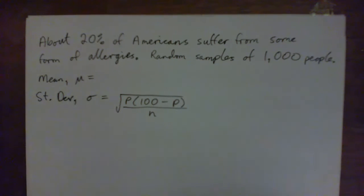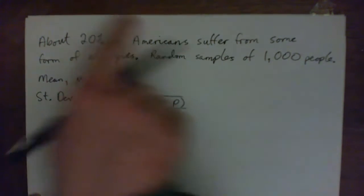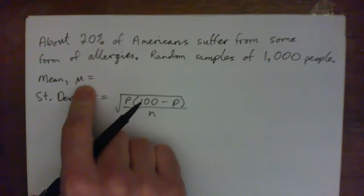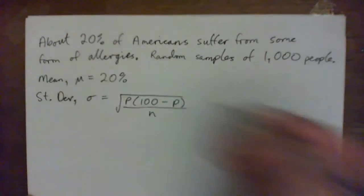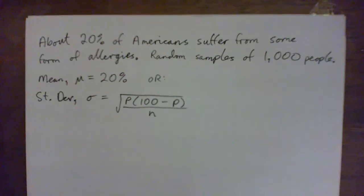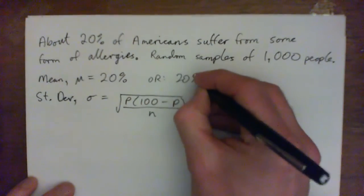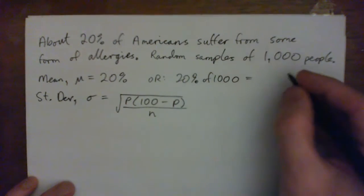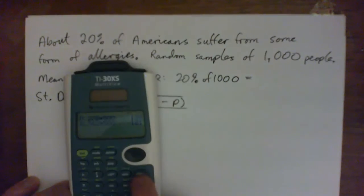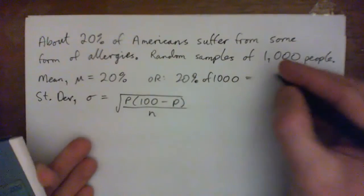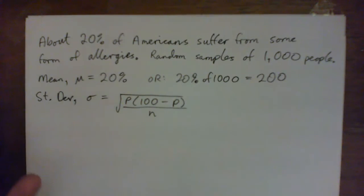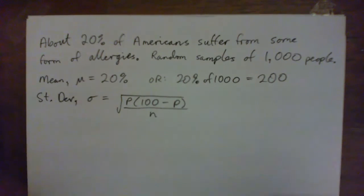From the Central Limit Theorem, we expect the mean of the population to be 20%, and we expect the mean of a random sample of a thousand people to also be 20%. In actual numbers, 0.2 times a thousand is 200. So if you picked a thousand people randomly, you'd expect about 200 of them to have allergies. The mean is almost so easy it's confusing.